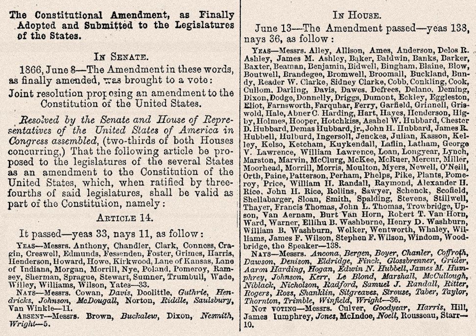However, the Second Section's reference to 'rebellion, or other crime,' has been invoked as a constitutional ground for felony disenfranchisement. The Fourth Section was held, in Perry v. United States, to prohibit a current Congress from abrogating a contract of debt incurred by a prior Congress. The Fifth Section gives Congress the power to enforce the amendment's provisions by 'appropriate legislation.' However, under City of Boerne v. Flores, this power may not be used to contradict a Supreme Court decision interpreting the amendment.